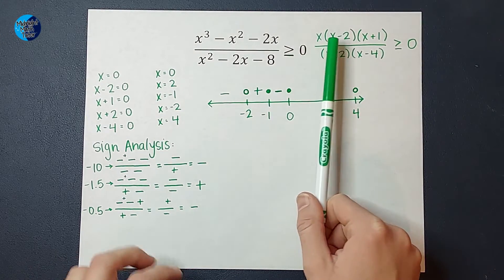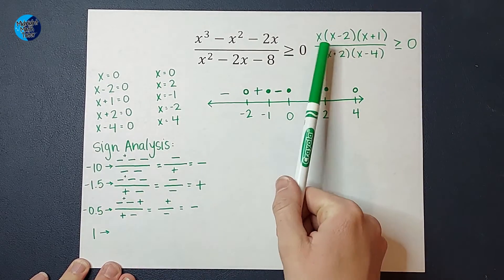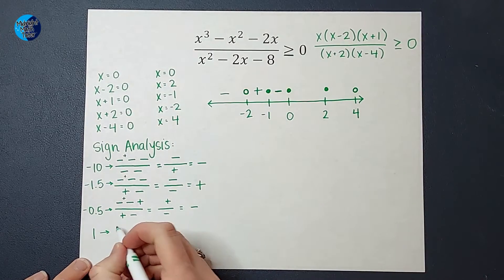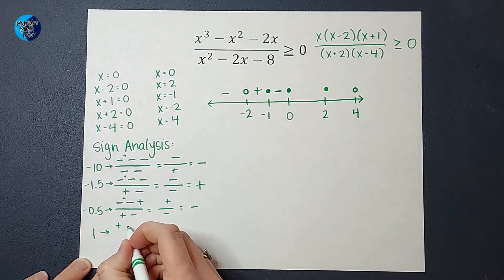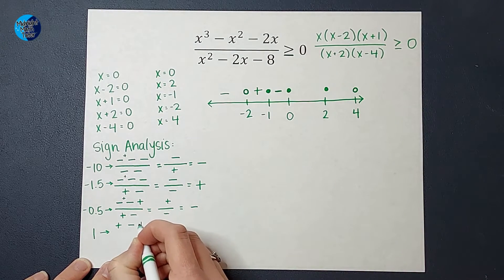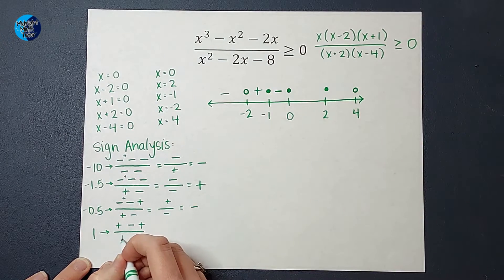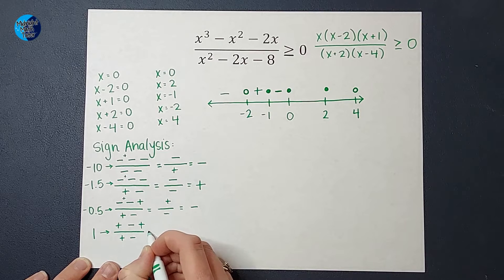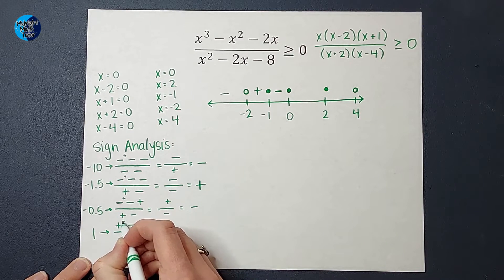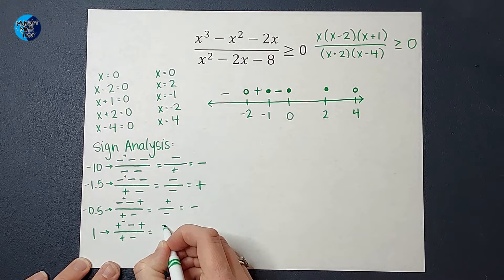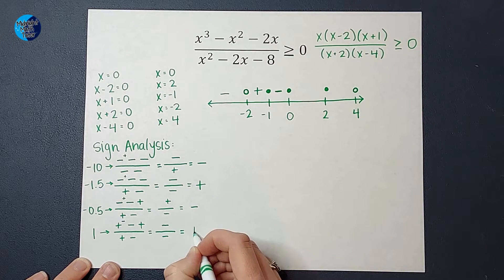Between 0 and 2, let's pick 1. When I plug in 1 for x, I get positive. 1 minus 2 gives a negative. 1 plus 1 gives a positive. Over: 1 plus 2 gives positive, 1 minus 4 gives negative. Positive times negative is negative, times positive is negative. Over positive times negative is negative. Negative divided by negative is positive.